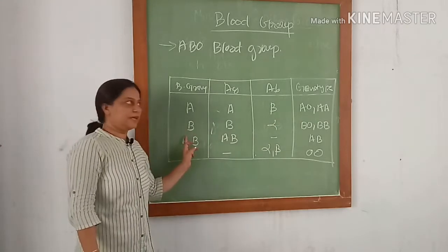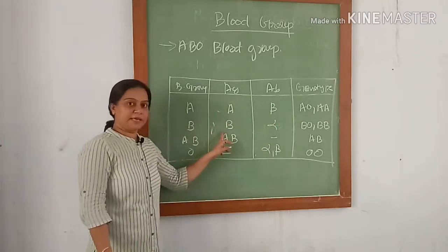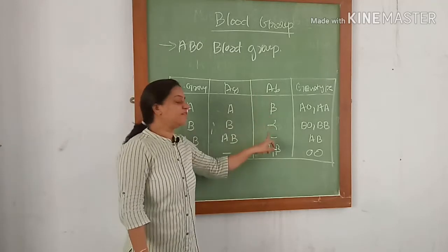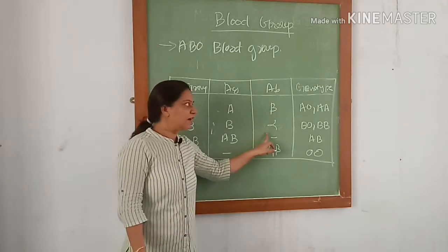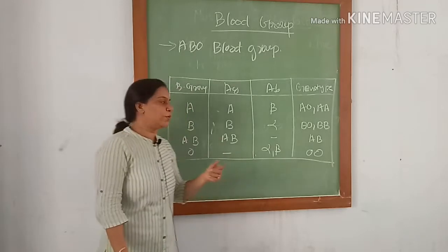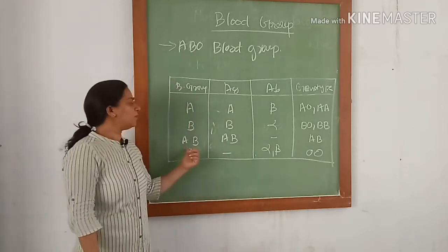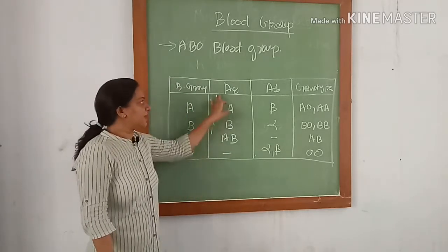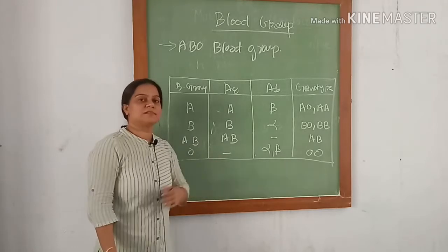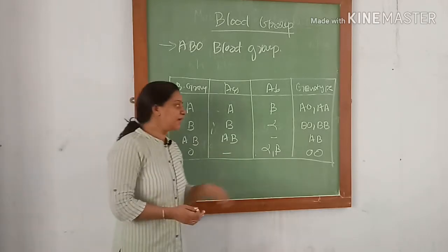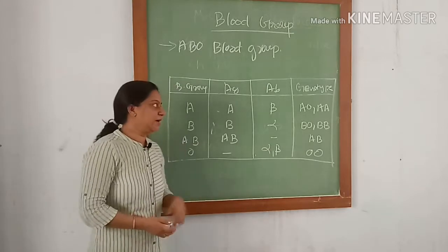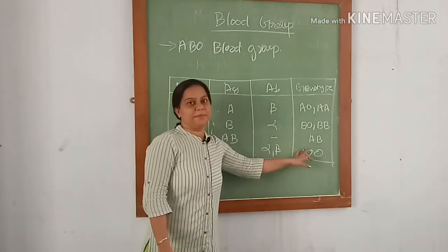For blood group B, antigen B will be present on the red blood cell membrane. Antibody will be alpha, and genotype will be BB or BO. For blood group AB, antigens A and B both will be present on the red blood cell membrane, and there will be no antibody in the plasma.